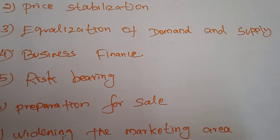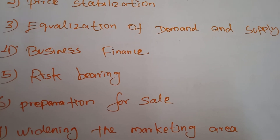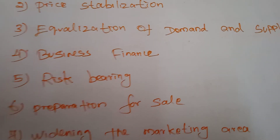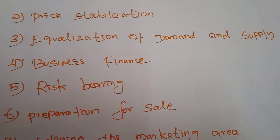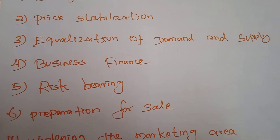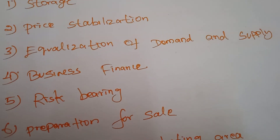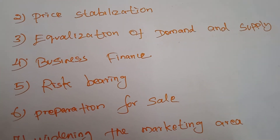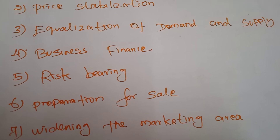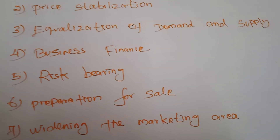Next is business finance. Based on the goods deposited in warehouses, depositors can get finance from banks and other financial institutions by showing the receipts issued by the warehouse keepers. The warehouse keeper's receipt is a document provided by the warehouse keeper. By showing this receipt, we can easily get financial facilities from commercial banks, agricultural banks, or cooperative banks.